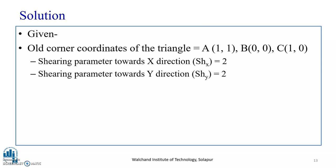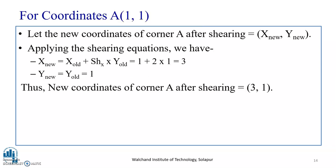The old corner coordinates of the triangle are A(1,1), B(0,0), C(0,1). The shearing parameter towards x direction, shx, equals 2, and shy equals 2. For coordinate A(1,1), the new coordinates after shearing in x are: x-new = x-old + shx × y-old = 1 + 2×1 = 3, and y-new = y-old = 1. Thus the new coordinates of corner A after x-shearing are (3, 1).